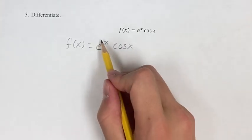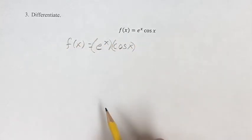So to do this, we're going to have to use the product rule. We're going to have this term times this term equal to our function.